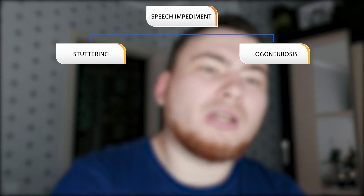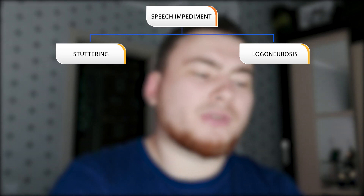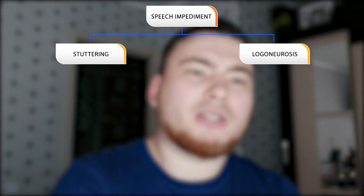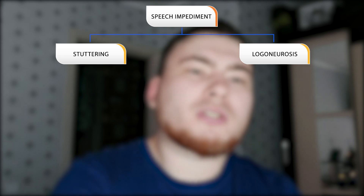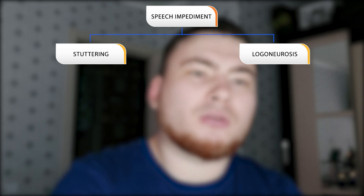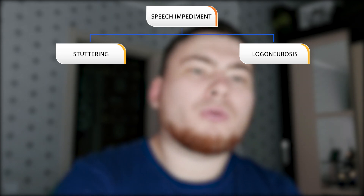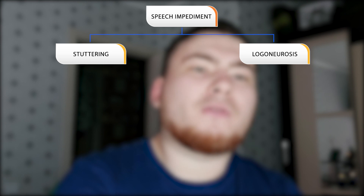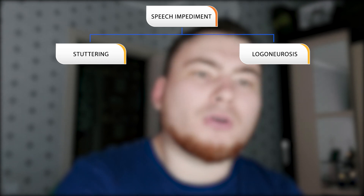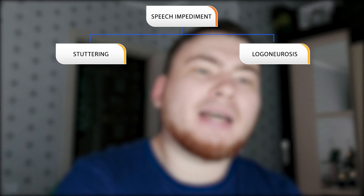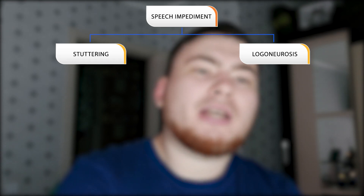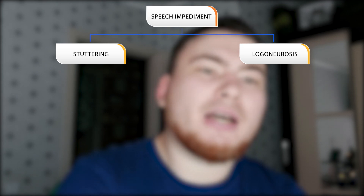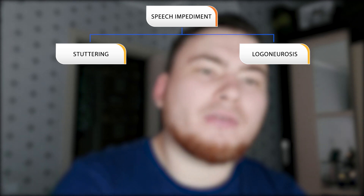Instead, they switch the word in their head to a similar one very quickly in order to avoid the spasm, and doing so allows them to speak without stuttering. Logoneurosis can be severe or semi-severe.